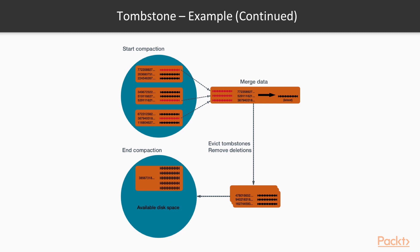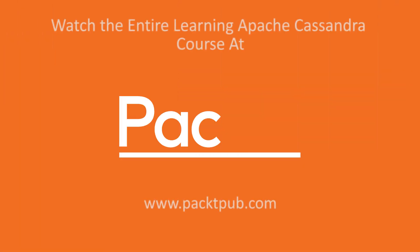That is the process of removing data — it uses the tombstone mechanism to do this because everything in Cassandra is immutable. We can look at the Cassandra documentation about deletes, and the entire process of tombstones and deleting data is described there in detail.